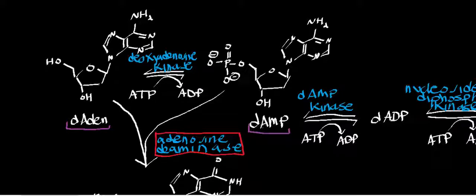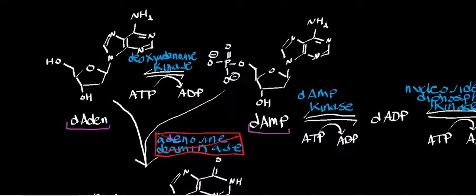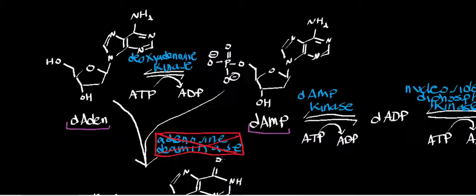The idea is that adenosine deaminase has a broad specificity. These are just four substrates it can react with: deoxyadenosine, adenosine, deoxy-AMP, and AMP. You can sort of view deoxyadenosine and deoxyadenosine monophosphate as existing at a branch point between nucleic acid synthesis and nucleic acid catabolism. If you go downwards and react these with adenosine deaminase, you get inosine derivatives going toward catabolism.